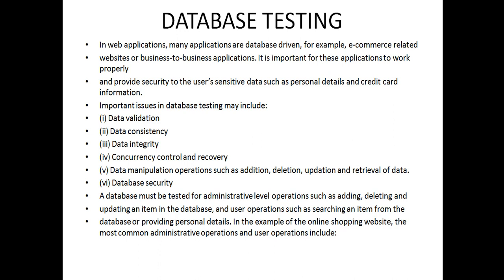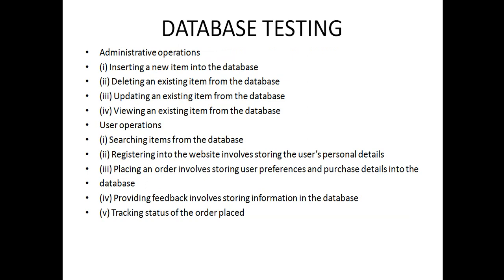In the example of an online shopping website, the most common administrative operations include inserting a new item into the database, deleting an existing item, updating an existing item, and viewing an existing item. User operations include searching items from the database, registering into the website by storing the user's personal details, placing an order by storing user preferences and purchase details, providing feedback by storing information in the database, and tracking the status of an order placed.